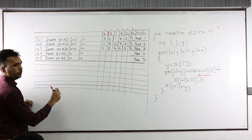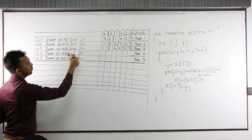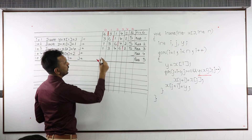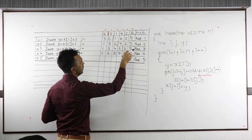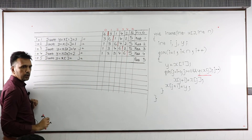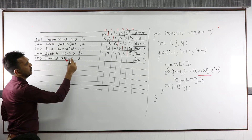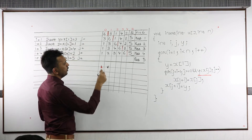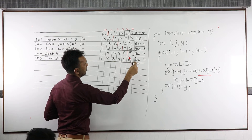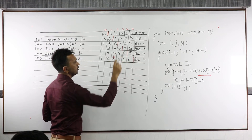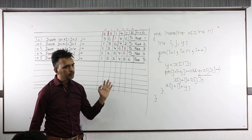Then i is 4, y is x of 4, which is 2. Insert 2 before 3, giving: 1, 2, 3, 4, 6, 5, with the imaginary wall after 6. Finally, i is 5, y is x of 5, which is 5. That gives: 1, 2, 3, 4, 5, 6, with the imaginary wall at the end. The array is now sorted.